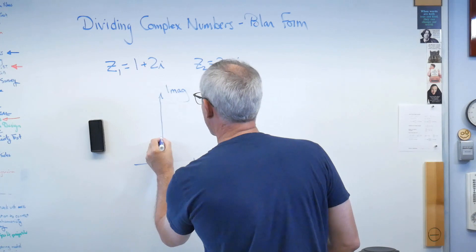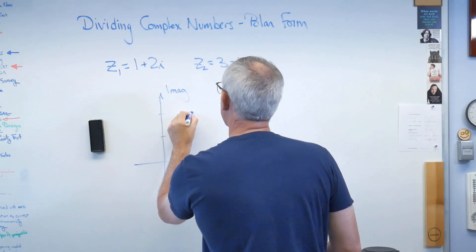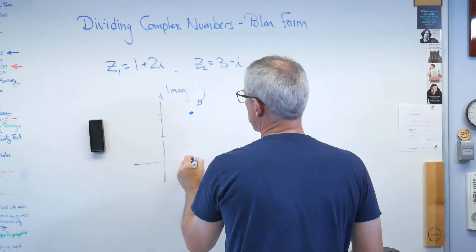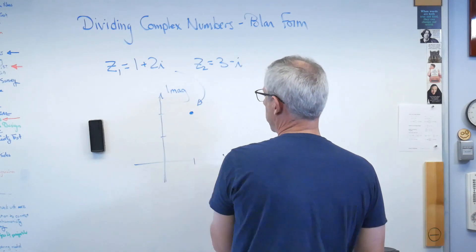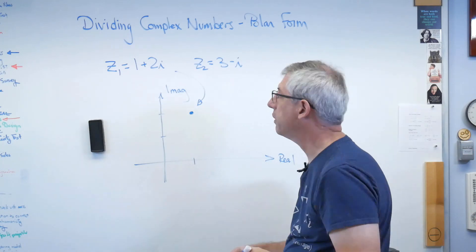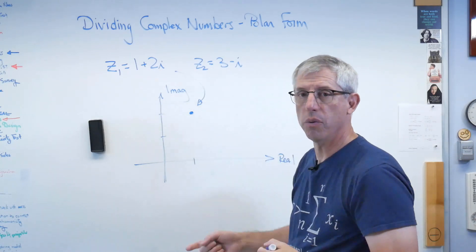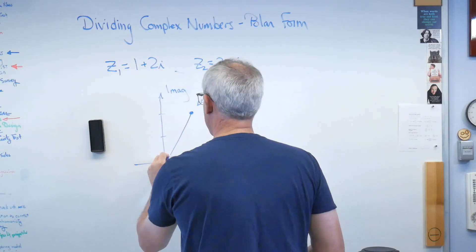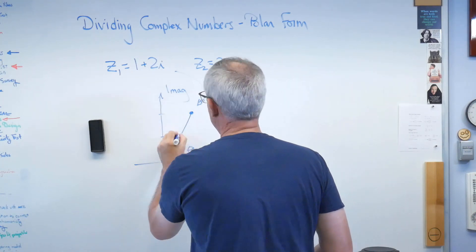This is the real imaginary axis. Real going this way, imaginary going that way. And I want to do 1 plus 2i. Well, if that's 1 there, 1, 2, there. There's that number right there. So there's 1 in the horizontal direction, the real direction, and 2 in the vertical direction, the imaginary direction.